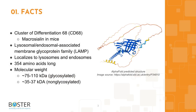Quick facts about CD68. Cluster of differentiation 68, or CD68, also called macrogelan in mice, is part of the lysosomal and endosomal associated membrane glycoprotein family. It is highly expressed in lysosomes and endosomes of macrophages. Human CD68 is 354 amino acids long, and the glycosylated form may range from 75 to 110 kilodaltons. If measures are taken to remove the glycosylation, a band may be observed around 35 kilodaltons.